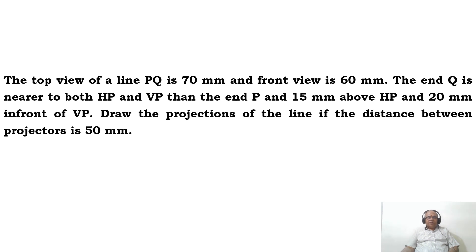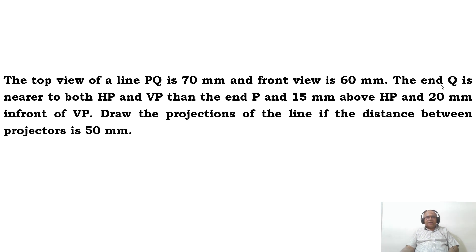In this video, we are going to take up one more problem on projections of line. The problem reads as: the top view of a line PQ is 70 mm and front view is 60 mm. End Q is nearer to both HP and VP than end P, and 15 mm above HP and 20 mm in front of VP. Draw the projections of the line if the distance between the end projectors is 50 mm.